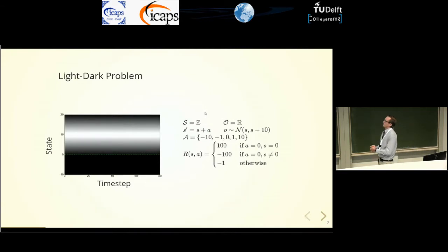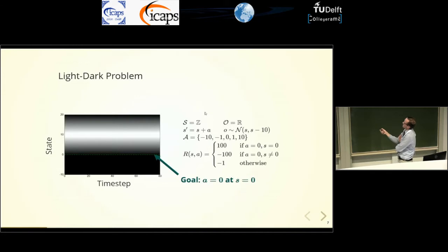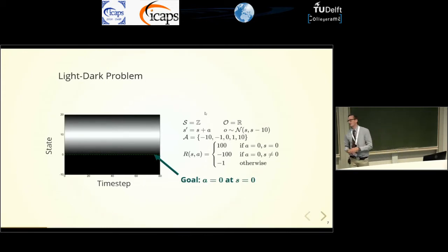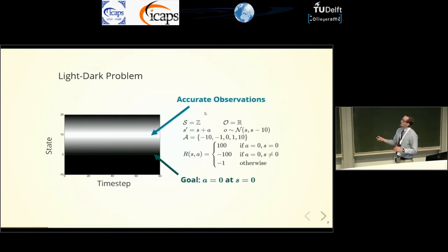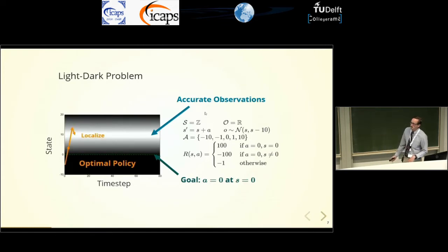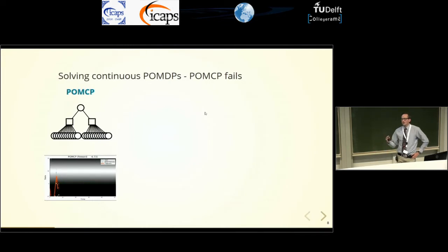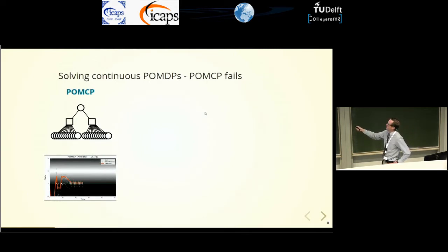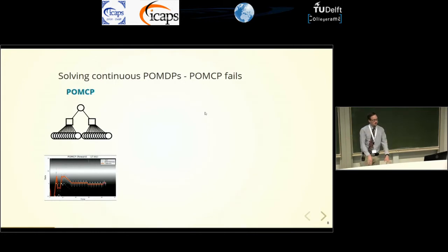Unfortunately, POMCP breaks down on problems with continuous observation spaces. This is the light dark problem: your goal is to take action A at state zero to get a reward of 100; if you take action A anywhere else, you get minus 100 reward. The states are integers, transitions are deterministic, but you don't know where you start. You only get accurate observations in the light region, and very noisy observations elsewhere. The optimal policy is to go to the light region, localize, then come down and take action A at the goal. When we apply POMCP to this, since the observation space is continuous, you sample a new observation node every time you build a tree. The tree becomes very wide but only one layer deep, making the algorithm incapable of making long-term plans.